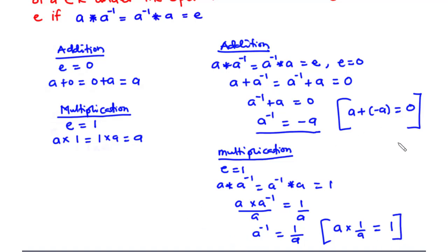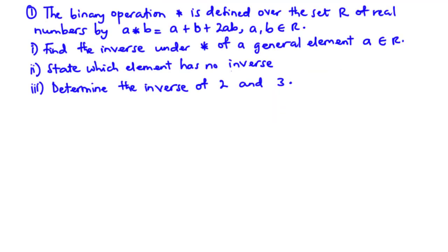Now let's move on and solve some questions regarding the inverse element of a binary operation. For the first question, the binary operation star is defined over the set r of real numbers by a star b equals a plus b plus 2ab, where a and b are members of r. We are going to find: (i) the inverse of the general element a; (ii) which element has no inverse; and (iii) the inverse of 2 and 3.